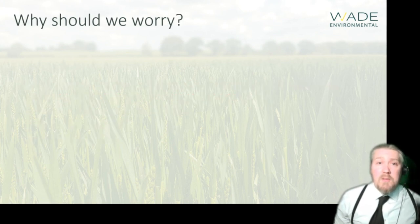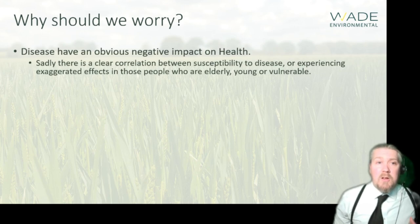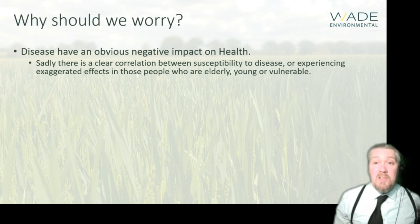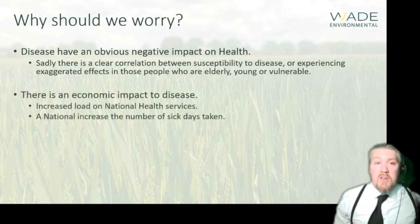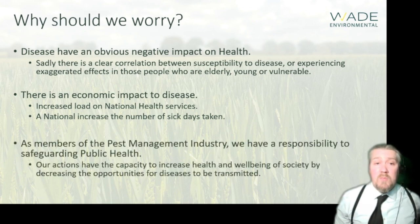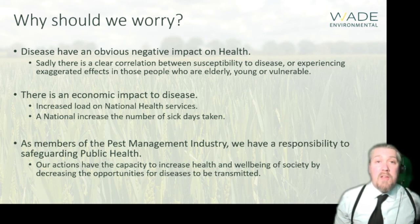Why should we be worrying? Disease has a very obvious negative impact on health, and there's a clear correlation between susceptibility to disease and exaggerated effects in those who are elderly, young, vulnerable, or pregnant. This brings a socioeconomic impact as well — an increased load on the National Health Service, and a clear correlation between instances of these diseases and a national increase in sick days. As members of the public health pest industry, we have a responsibility to safeguard public health, as our actions have the capacity to decrease the opportunity for these diseases to be transmitted.